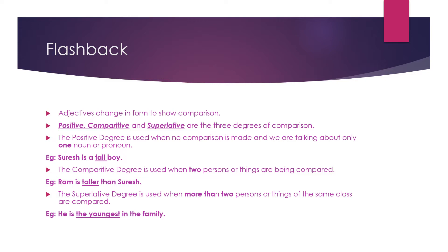The superlative degree is used when more than two persons or things of the same class are compared, meaning we are talking about more than two people or things. For example, 'He is the youngest in the family.' As you see in this example, we consider that there are more than two members in the family, and among them he is the youngest. That is the superlative degree.